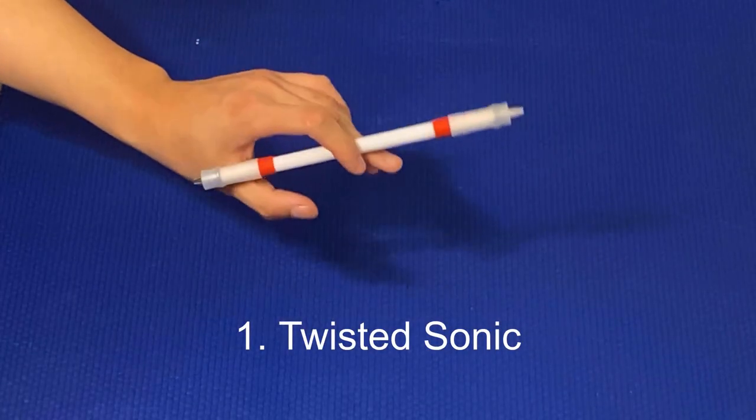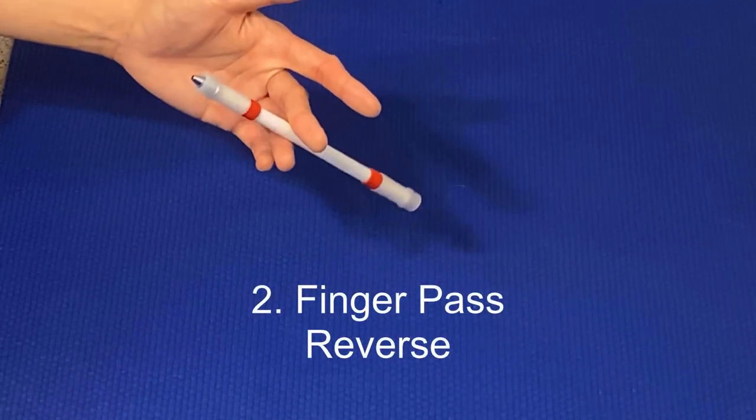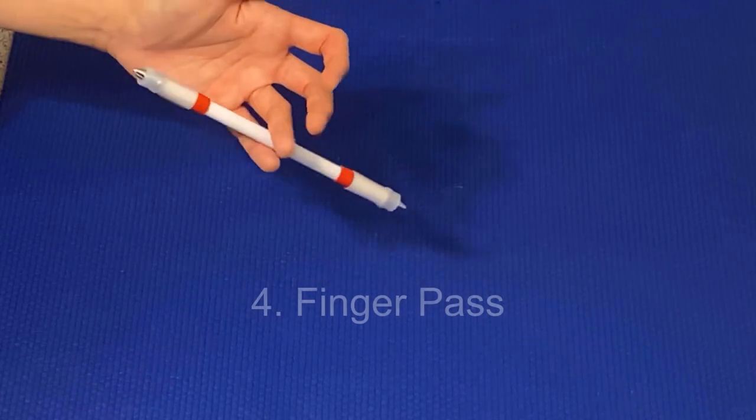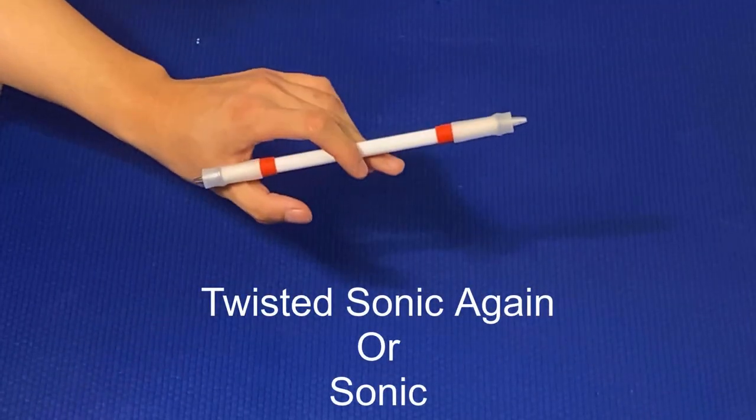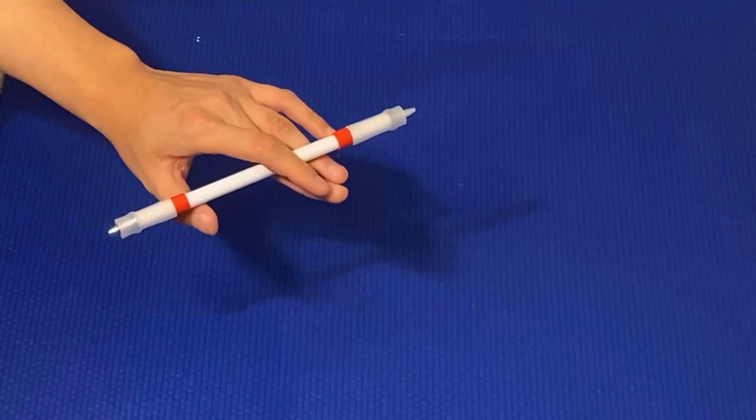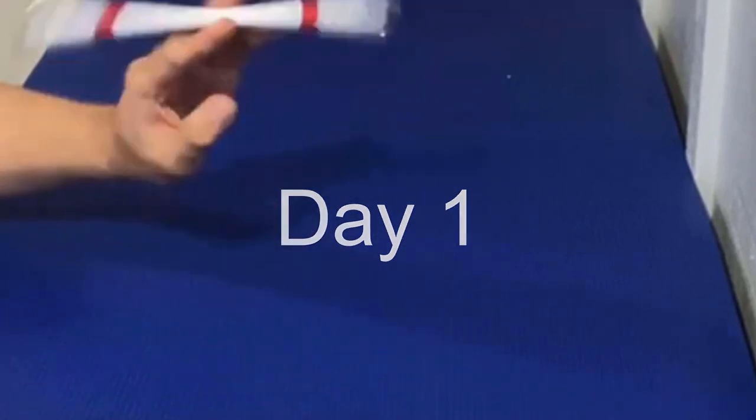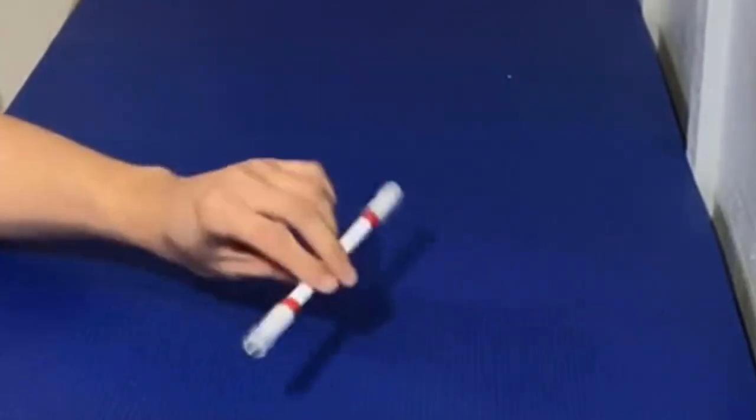If you want to learn how to do this combo, you need to know these pen tricks beforehand. The first one is Twisted Sonic, the finger pass reverse is the second one, the Twisted Sonic reverse is third, fourth one is finger pass, then the Twisted Sonic or you could do a Sonic, and then to close it off you do a thumb around.